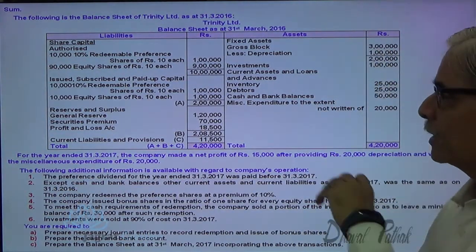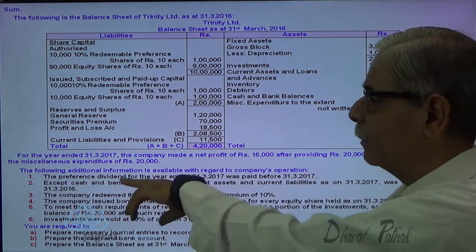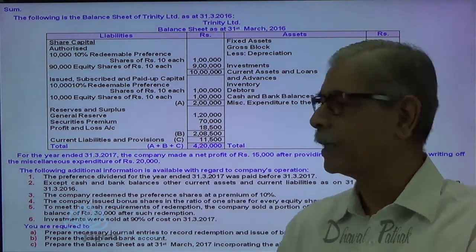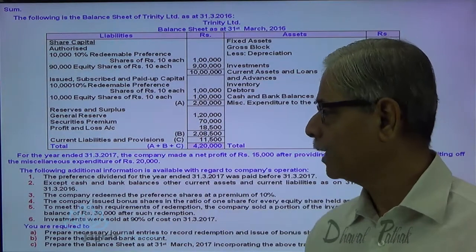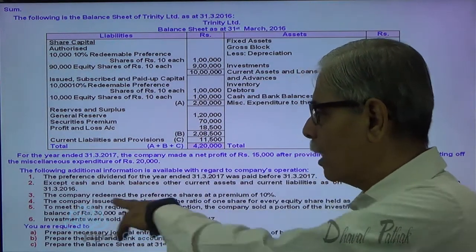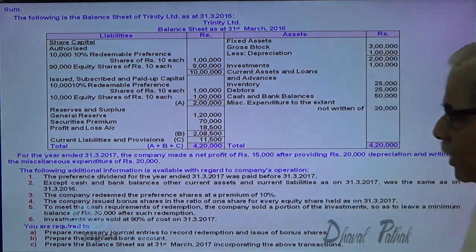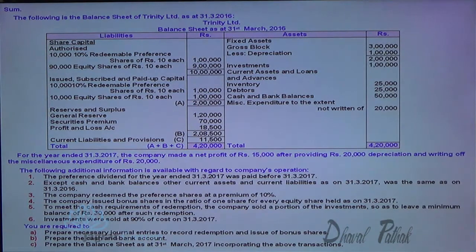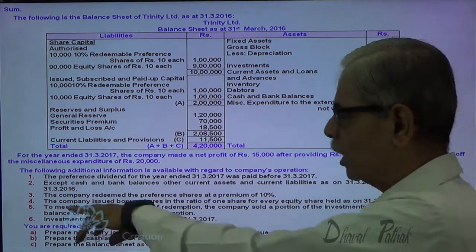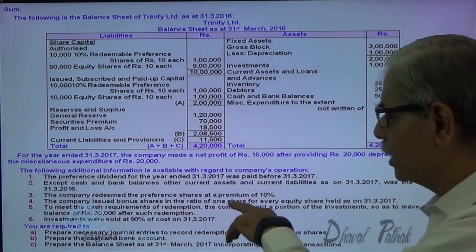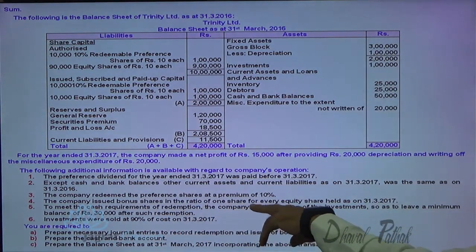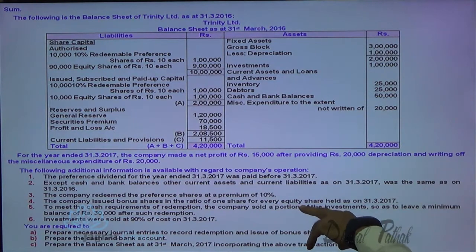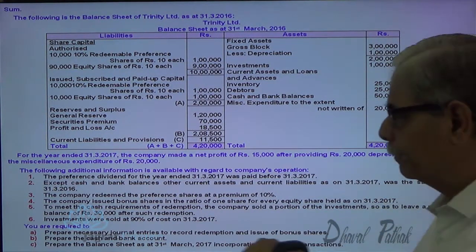So, these current assets and liabilities are going to be the same at the end of the year as at the beginning of the year. The company is redeeming the preference shares at a premium of 10%. The company issued bonus shares in the ratio of one share for every equity share held on 31st of March 2017.